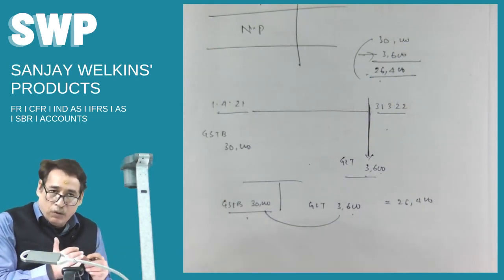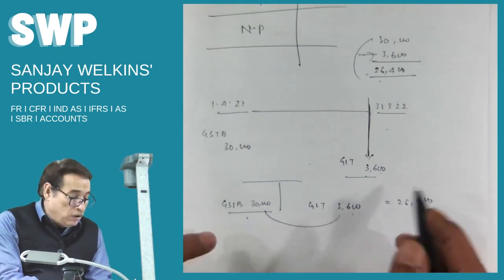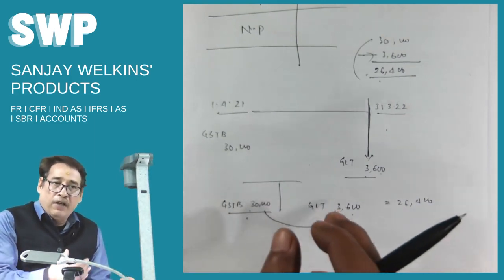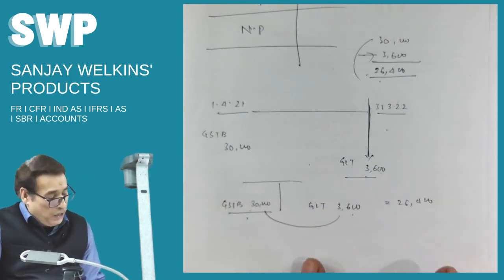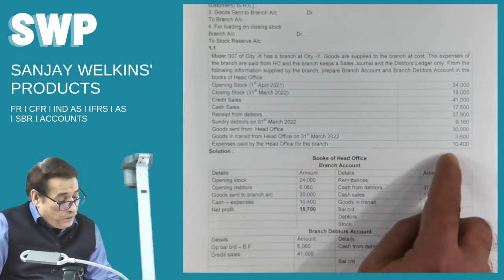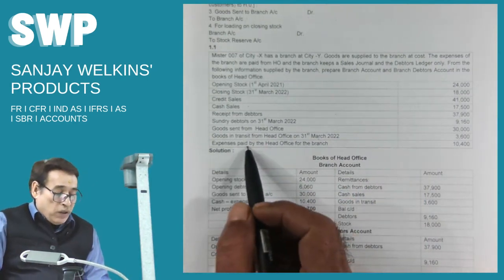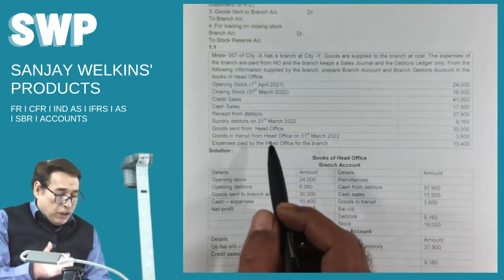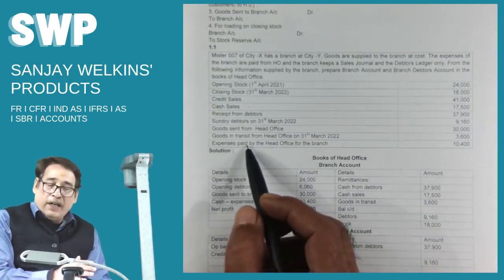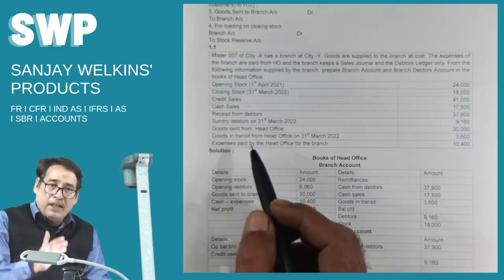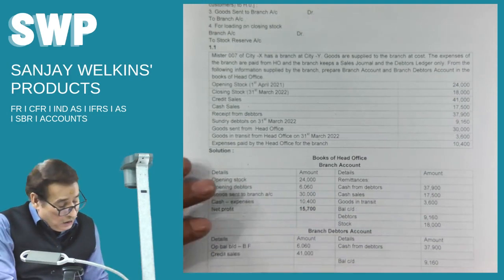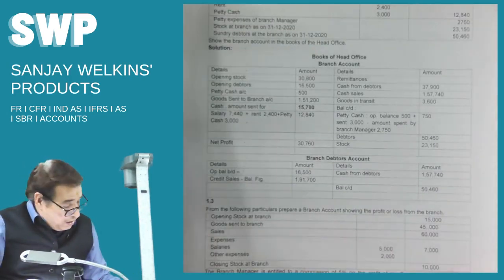The basic motive is to reflect the figure of goods received by the branch. So goods sent goes to the debit side and goods in transit, if given, goes to the credit side of the branch account. Regarding expenses paid by head office for the branch — 10,400 — whenever this line is given, construe it as: head office has sent cash to the branch, and the branch has paid for those expenses.